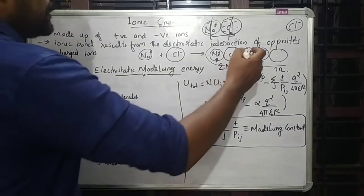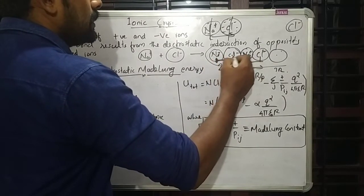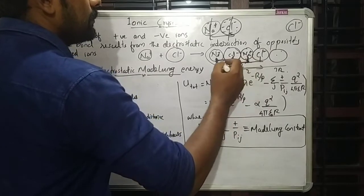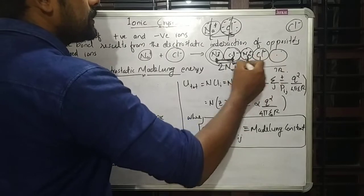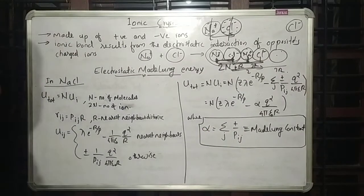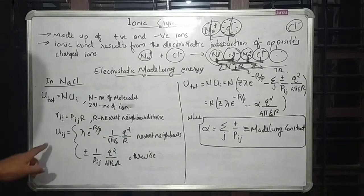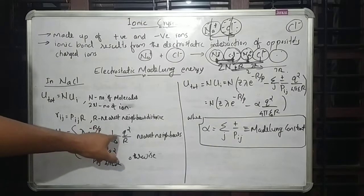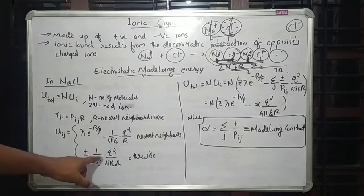Taking one atom as the reference, R is the nearest-neighbor distance, 2R is the second-nearest, 3R is the third-nearest, and so on. The interaction energy UIJ for nearest neighbors is: UIJ = λ·e^(-R/ρ) - Q²/4πε₀R. For all other ions: ±(1/Pij)·Q²/4πε₀. The repulsive term λ·e^(-R/ρ) applies only to nearest neighbors, since only they have overlapping electron clouds.